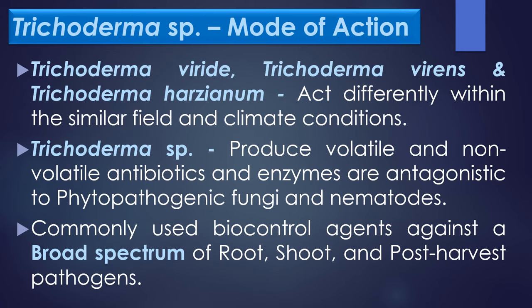Mode of action of Trichoderma species: Products that are commercially marketed commonly contain one or more Trichoderma species such as Trichoderma viridi, Trichoderma virans, and Trichoderma hazianum. The efficiency of products containing various species or strains may act differently within similar field and climate conditions. Trichoderma species are being used most abundantly against plant pathogens, and several species produce volatile and non-volatile antibiotics and enzymes that are antagonistic to phytopathogenic fungi and nematodes.